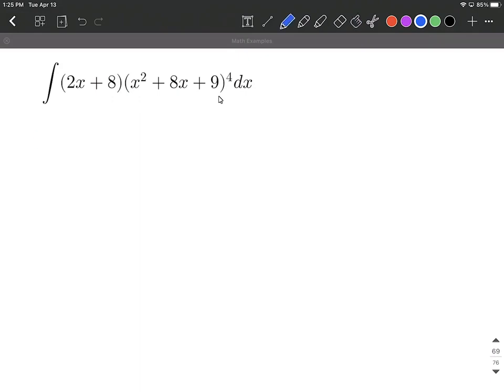So what I want to do is pick out u to be an inner function. What I notice is this whole second set of parentheses is all raised to the fourth power. That's kind of my indicator that whatever's inside the set of parentheses, the x squared plus 8x plus 9, is going to be our u.